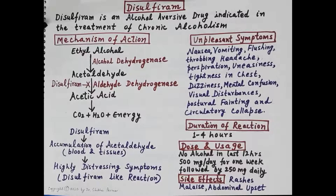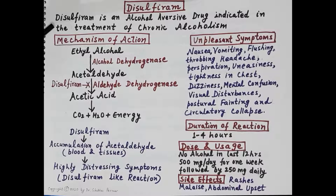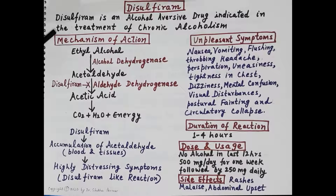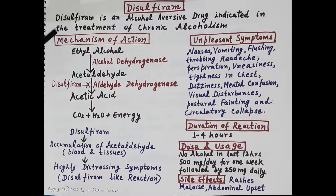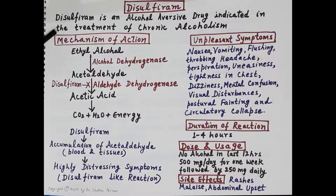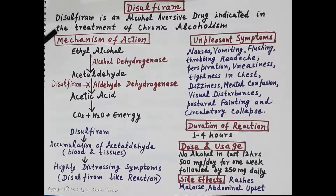Hello students. In today's session we'll talk about disulfiram. Disulfiram is an alcohol aversive drug indicated in the treatment of chronic alcoholism. Disulfiram induces a strong dislike for alcohol — it causes accumulation of acetaldehyde in the blood and tissues, and this acetaldehyde produces highly distressing symptoms.